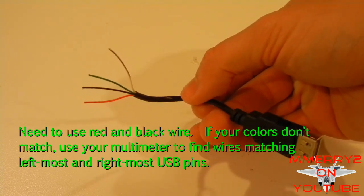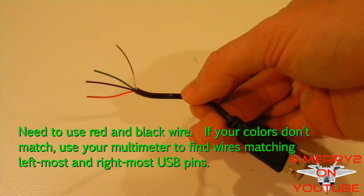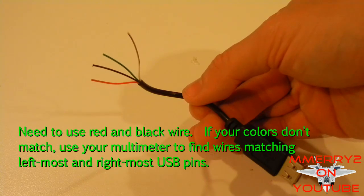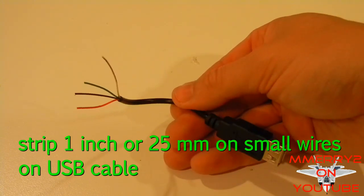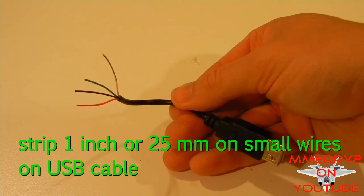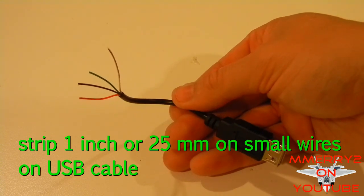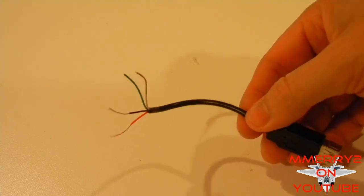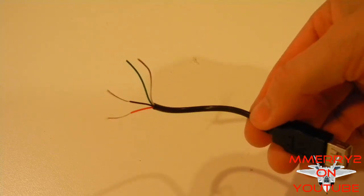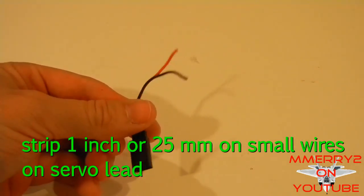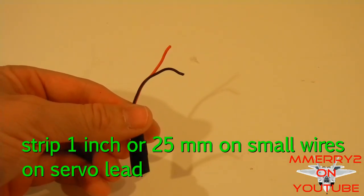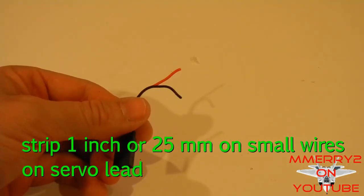Typically the red and black wires are the ones you're going to want to use to connect to your servo lead. So, now I'm going to strip a little bit of the red and black wires back so that I can connect them to my servo lead. I stripped a little bit of the red and black back but probably about an inch. Now you also want to take the servo lead and strip maybe an inch back on the red and black wires.